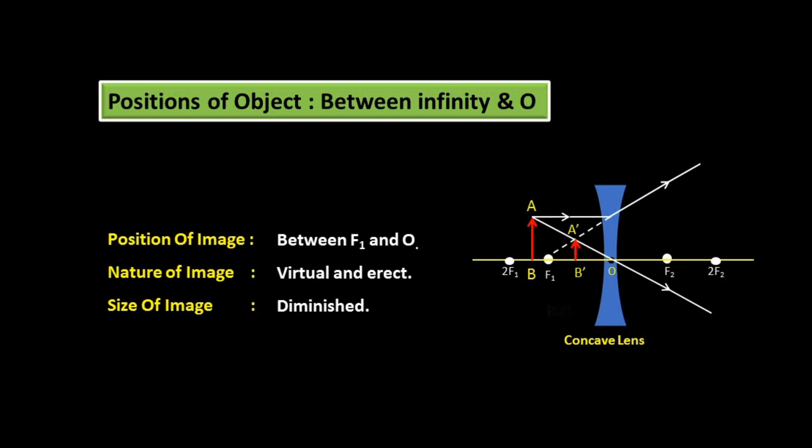The image formed by a Concave Lens at any position is always Virtual, Erect, and Small.